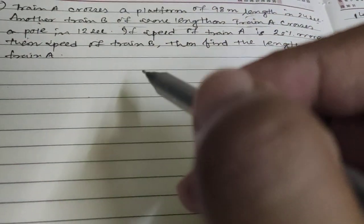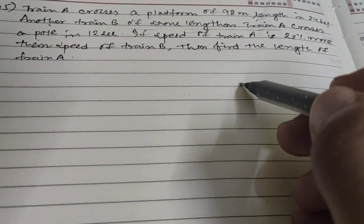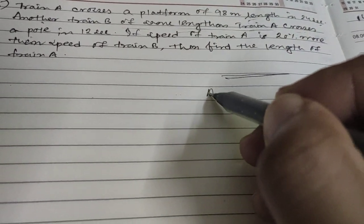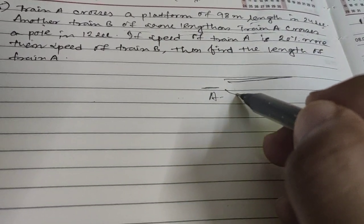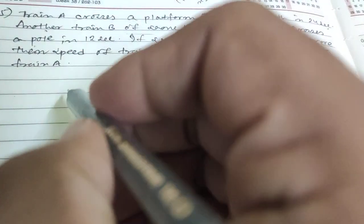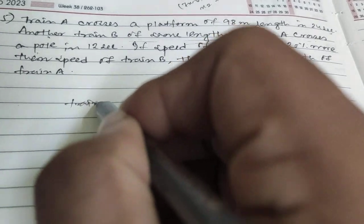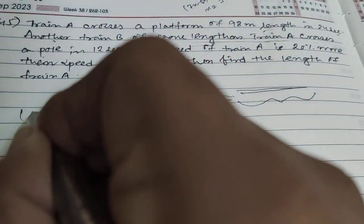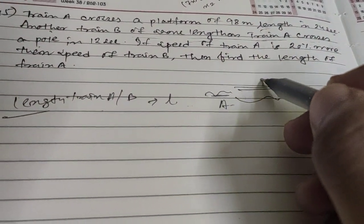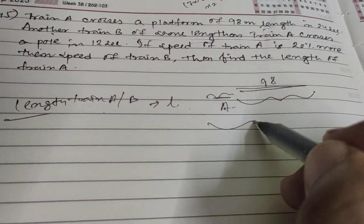Okay, so train A crosses a platform. The total length covered is platform length plus train length. Suppose the length of the train A or B is L, and the platform length is 98 meters. So total distance A covered is L plus 98.